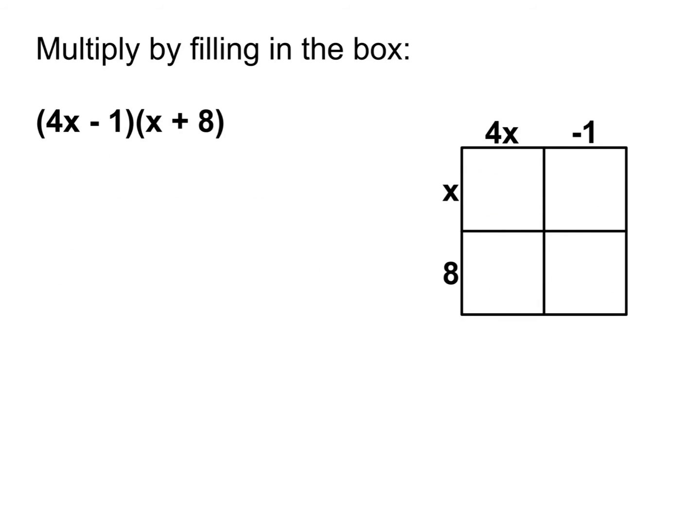Having seen that first one done, this one's very similar. Go ahead and use the box there to multiply this out. In our first box we're going to do 4x times x, which is 4x squared. The box next to that is x times negative 1, which is negative x. Then bottom left, 8 times 4x gives us 32x. And 8 times negative 1 gives us negative 8.